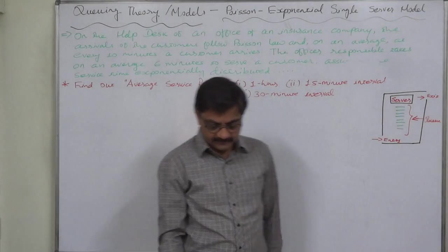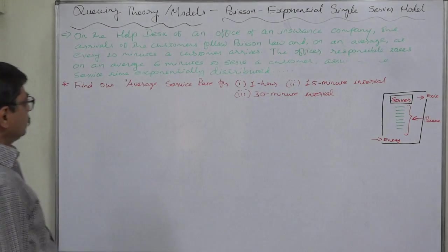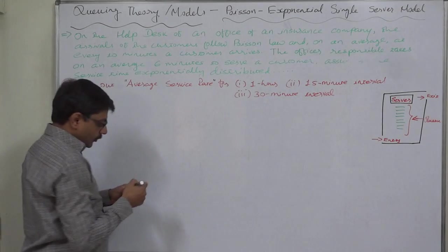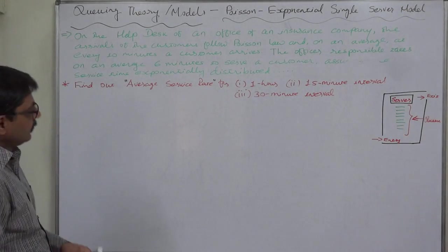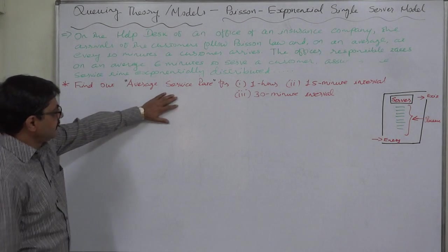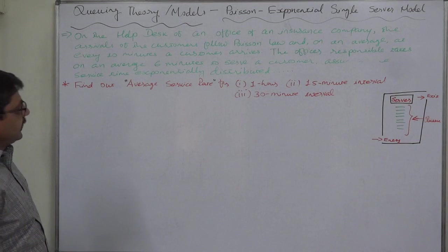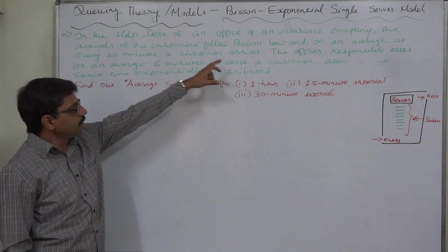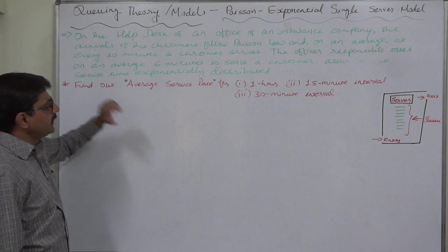Hello and welcome. Now this is the turn of service rate, the same problem, but we are going to find out the average service rate. The case is the same: on the help desk of an office of an insurance company, the arrivals of the customers follow Poisson law, and on average every 10 minutes a customer arrives.